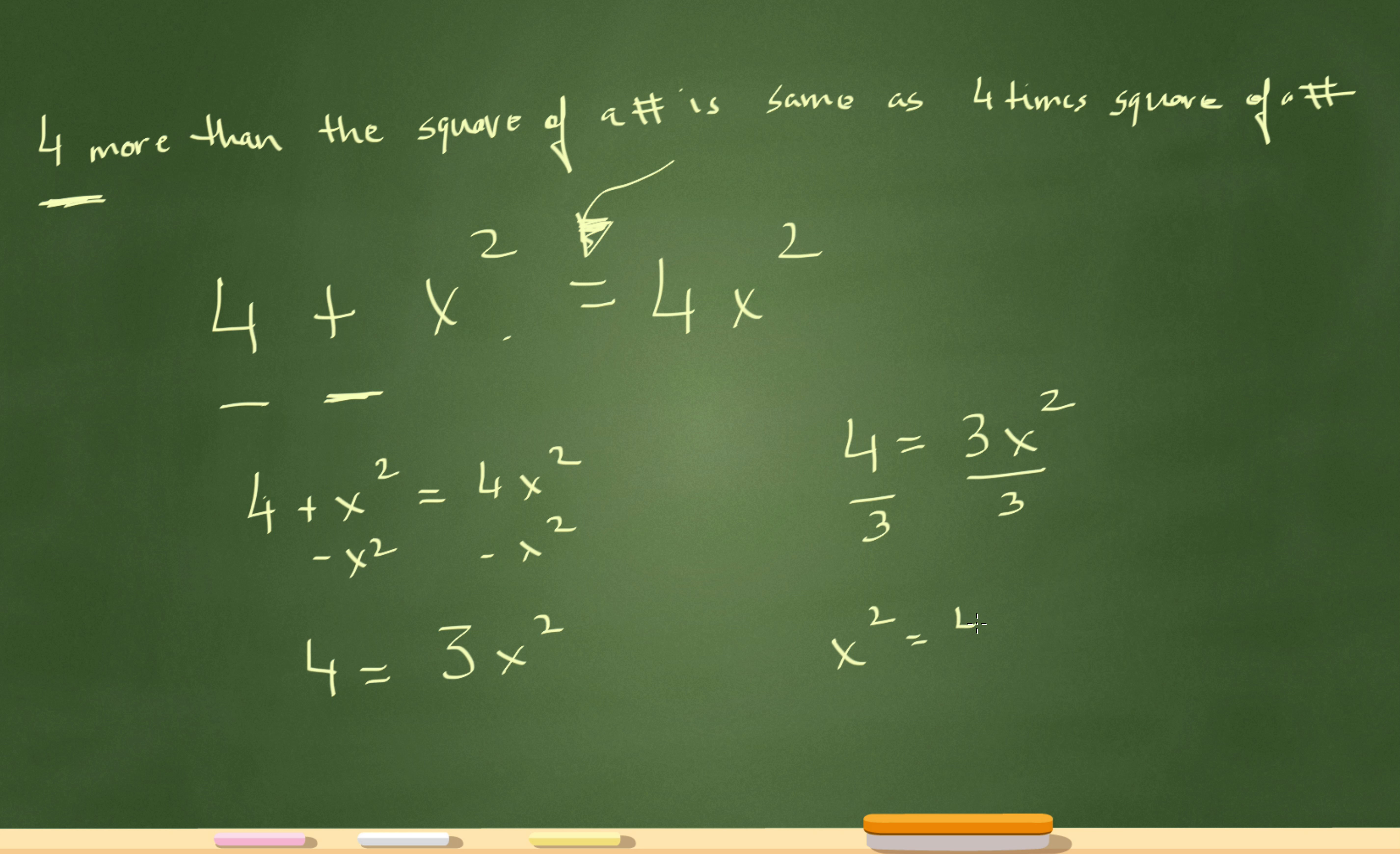x squared will equal 4 over 3, or x will equal square root of 4 over 3. And if I have an answer under a square root, both the numerator and the denominator is square rooted. So square root of 4 is 2, and square root of 3 can't be broken down any further.